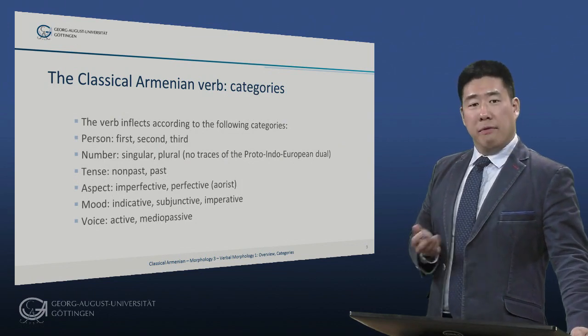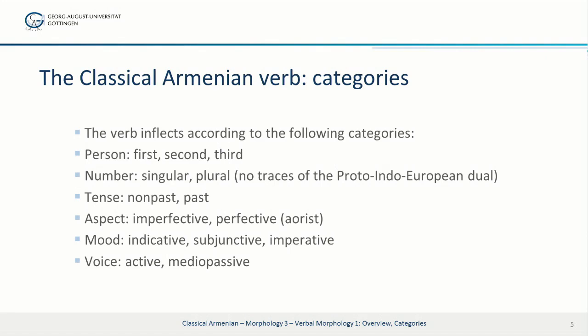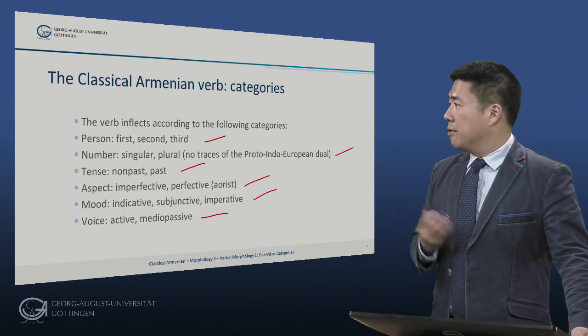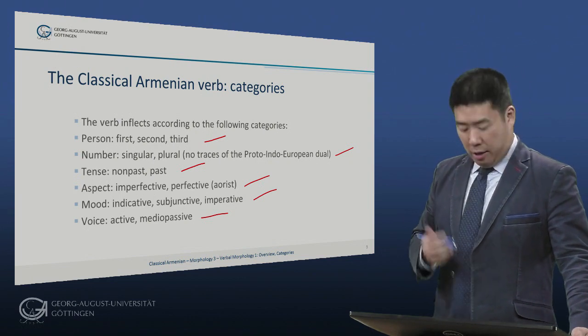The verb inflects according to the following categories: person (first, second, and third), number (singular and plural), there being no traces of the Proto-Indo-European dual in classical Armenian verbal inflection. Non-past (meaning present, but could also be future) versus past. Two different aspects: imperfective, traditionally called present, and perfective, traditionally called aorist. Moods: indicative, subjunctive, and imperative. And finally, two voices: active and medio-passive. These are the relevant categories of verbal inflection.